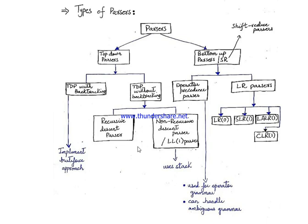What does TDP with backtracking mean? Suppose we have some grammar with some productions and we want to parse some string. In every step it involves a decision — you have to choose which input symbol from the string to use, and the decision will be to choose which production to apply.